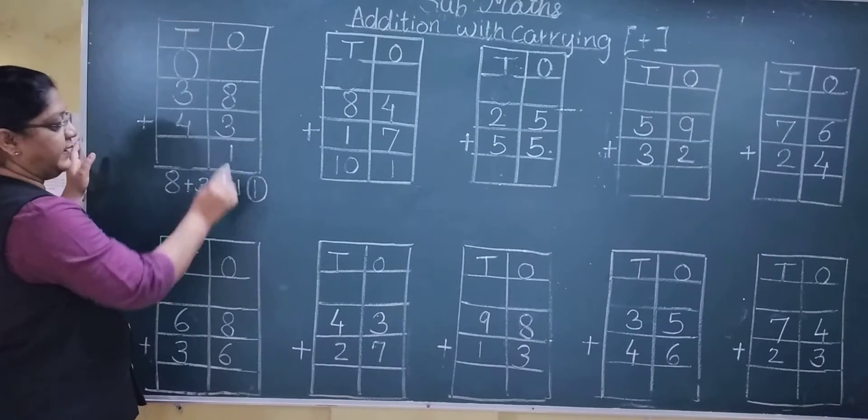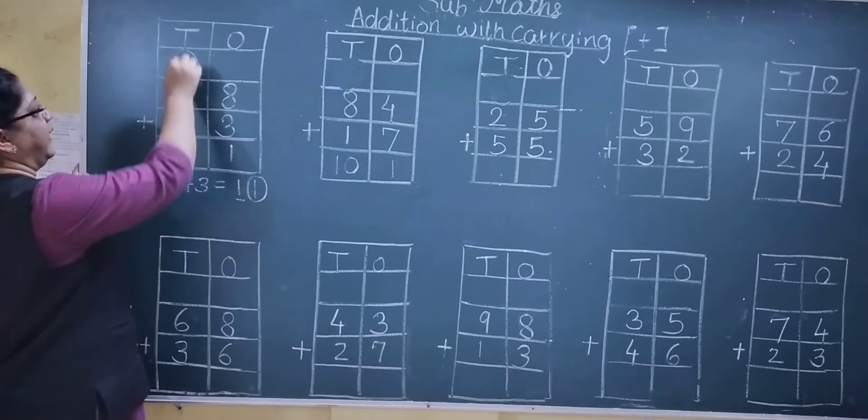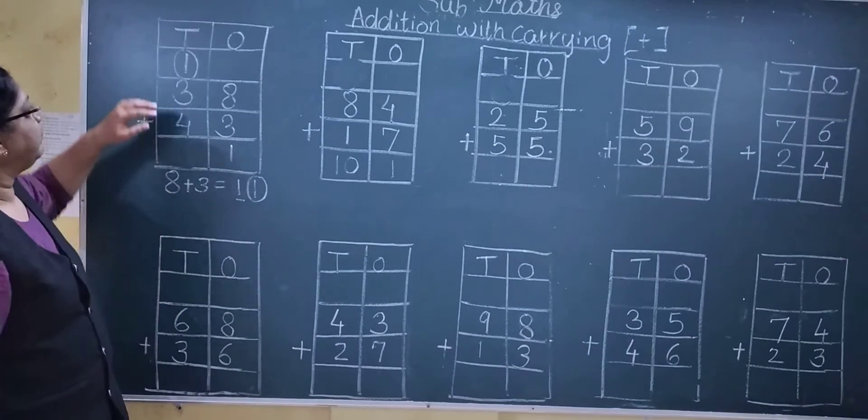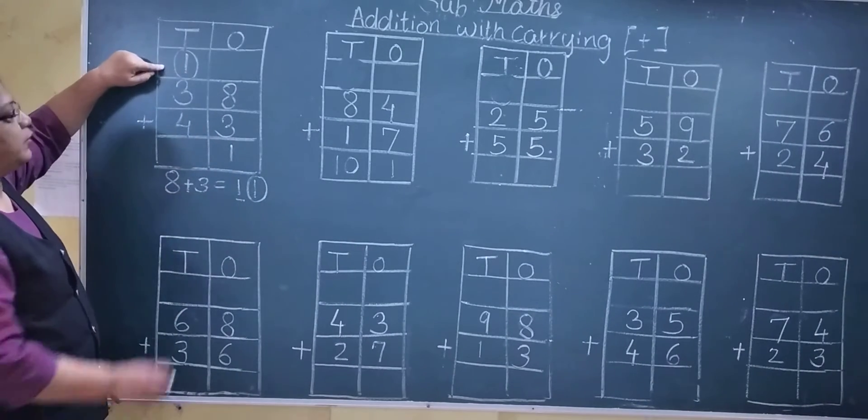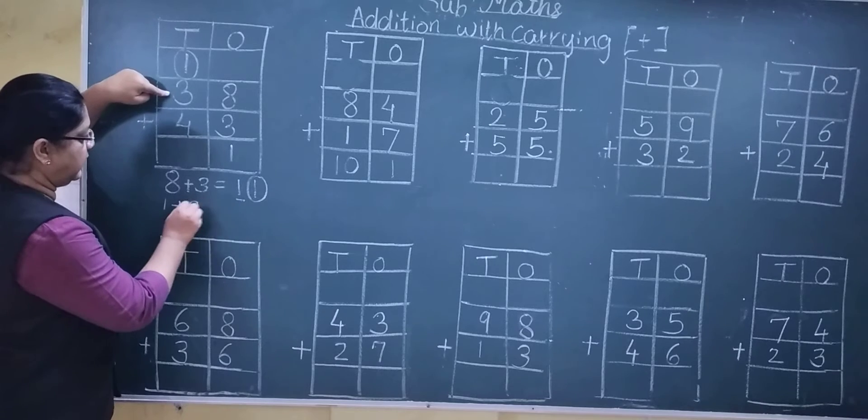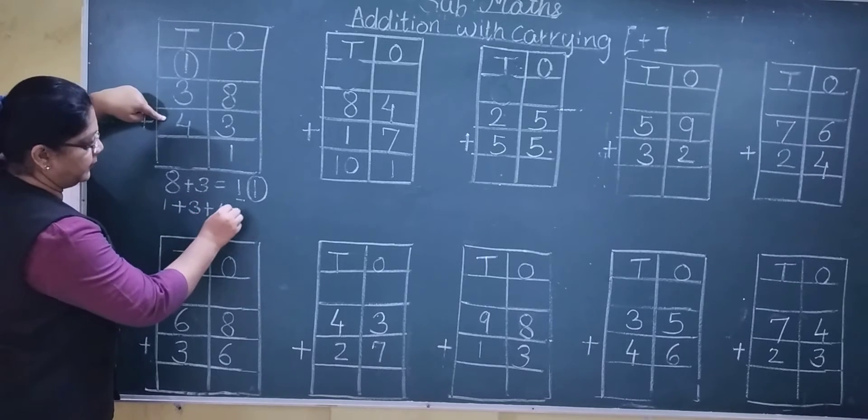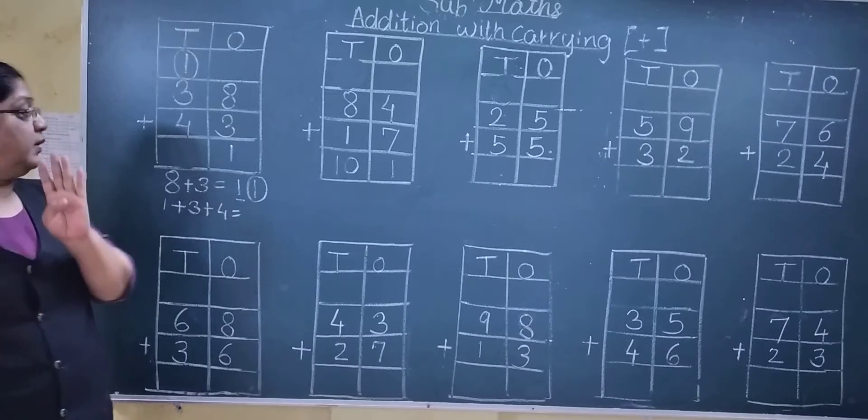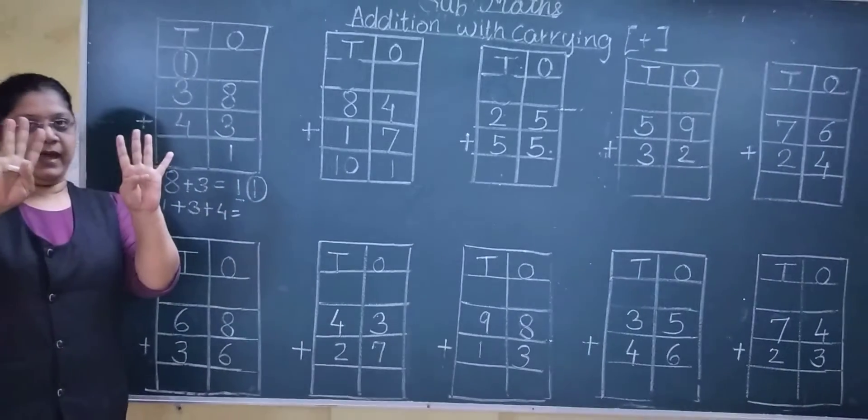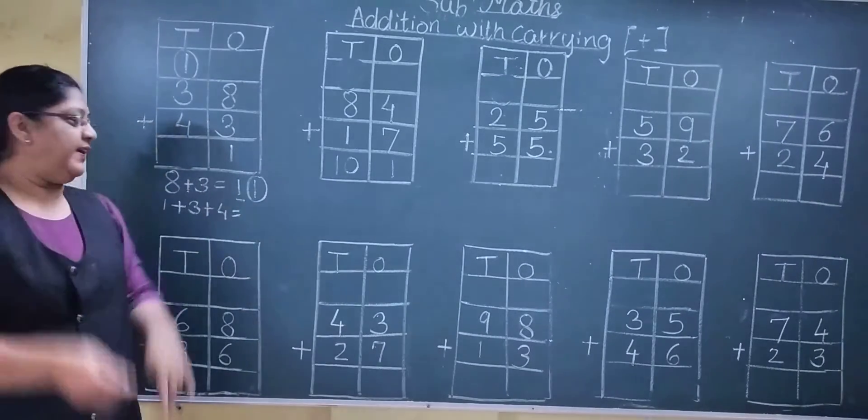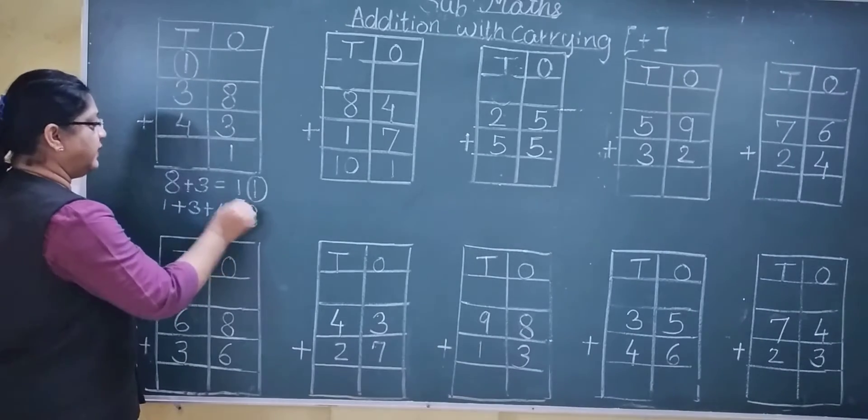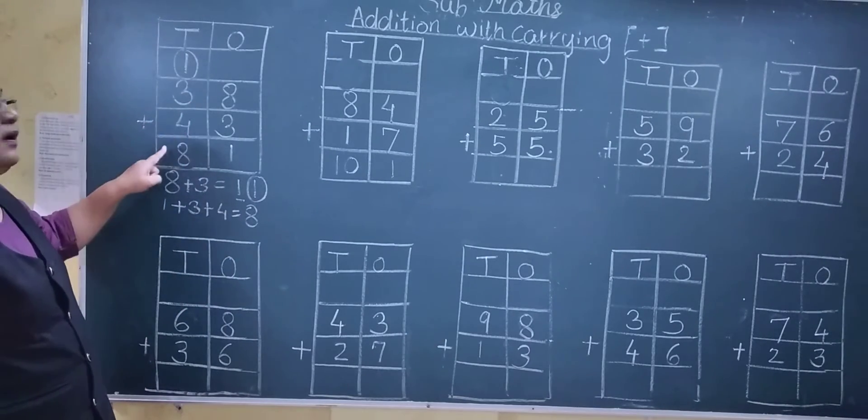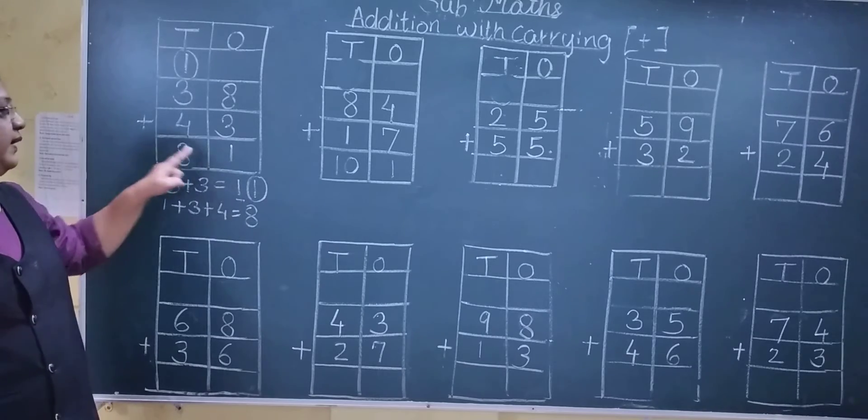This 1 one you will write here, and this 1 ten, carry over to the tens column. Now see, and carry also, 1 plus 3 plus 4. See 1 plus 3 is 4, and 4 plus 4, yes count these fingers, 8. Then again you read this sum: 38 plus 43 is equal to 81.